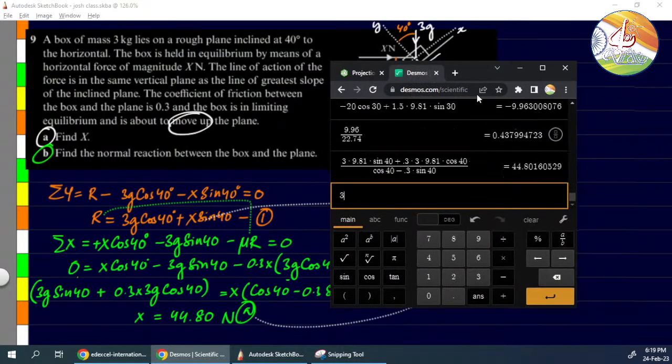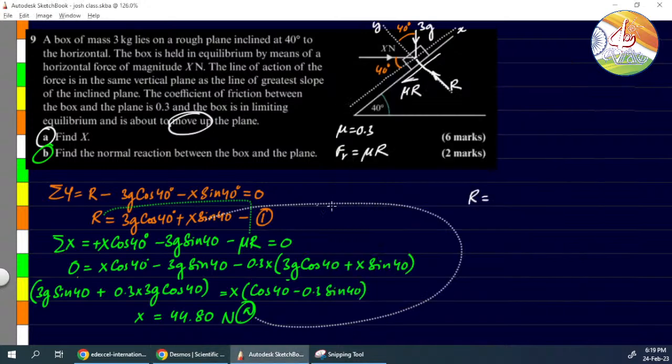R equals 3 into 9.81 into cos 40 plus X, X value is 44.80, into sin 40. So we are getting 51.34 newtons. So this is the answer to part b.